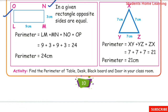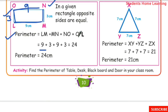Rectangle: in a given rectangle, opposite sides are equal. One side measures 9 cm and an adjacent side measures 3 cm, so the opposite sides match. Perimeter equals LM plus MN plus NO plus OL, which is 9 plus 3 plus 9 plus 3. Adding gives 24. Perimeter is equal to 24 cm.